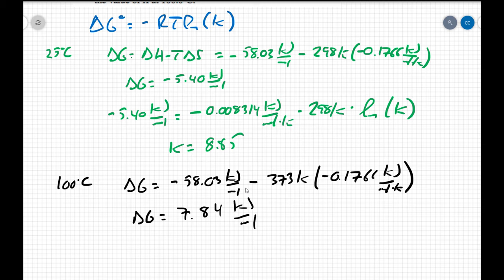This is interesting: at 25°C we got a negative ΔG, meaning the reaction is spontaneous; at 100°C we get a positive ΔG, meaning it's not spontaneous. We have mixed messages — a negative ΔH, which favors spontaneity, but a negative ΔS, which works against it. With negative ΔH and negative ΔS, reactions tend to be spontaneous at lower temperatures but not at higher ones. Somewhere between 25°C and 100°C, this reaction switched off and became non-spontaneous.